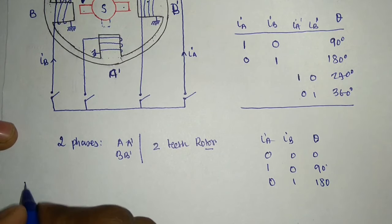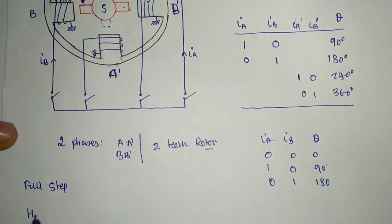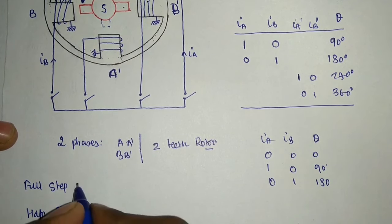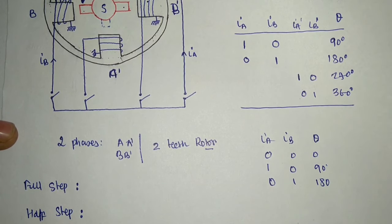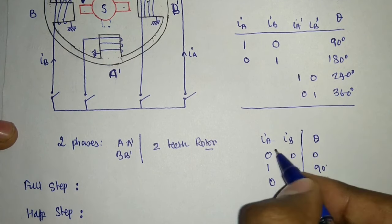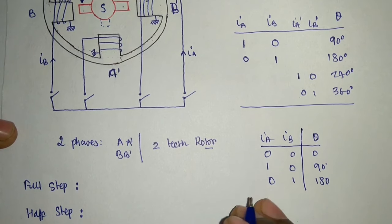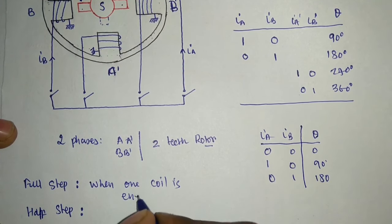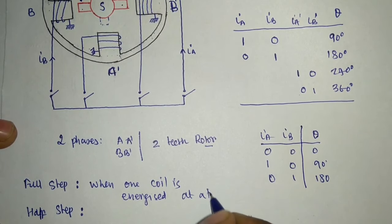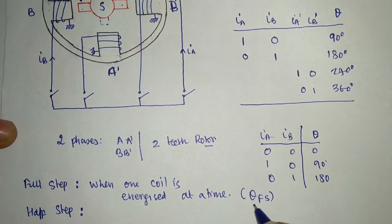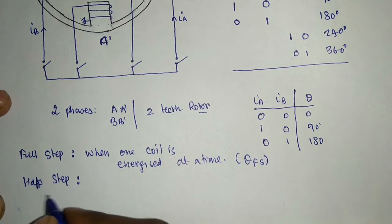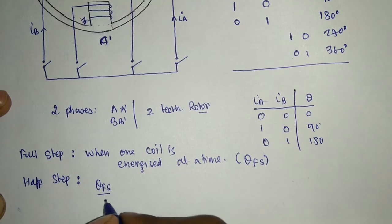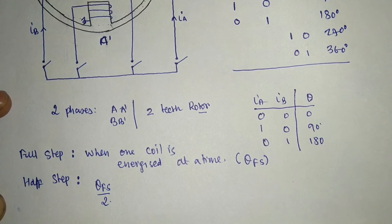There is a concept of full step angle and half step angle depending on the energization of coils A A-dash and B B-dash, determining the output angle or rotor position. Full step is when one coil is energized at one time — the angle rotated in that step is the full step angle theta_FS. Half step is basically half of full step, so theta_HS = theta_FS / 2. I will explain the energizing conditions so you can understand how to calculate both.